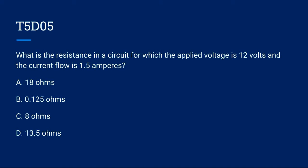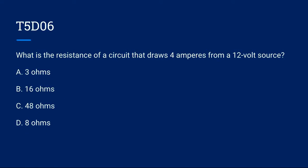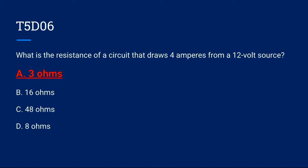T5D05: What is the resistance in a circuit for which the applied voltage is 12 volts and the current flow is 1.5 amperes? A. 18 ohms, B. 0.125 ohms, C. 8 ohms, or D. 13.5 ohms. Correct answer is C. 8 ohms. T5D06: What is the resistance of a circuit that draws 4 amperes from a 12 volt source? A. 3 ohms, B. 16 ohms, C. 48 ohms, or D. 8 ohms. Correct answer is A. 3 ohms.